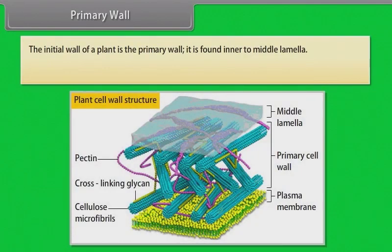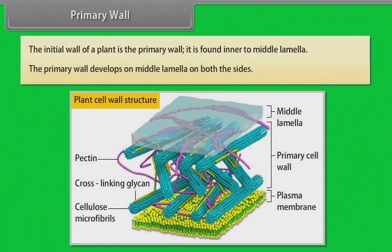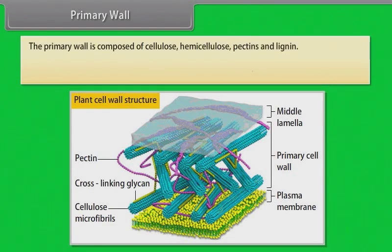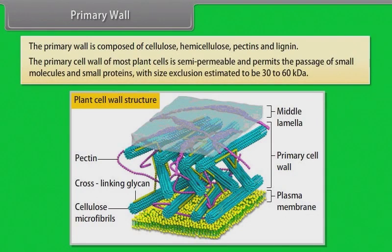Primary wall: The initial wall of a plant is the primary wall, found inner to the middle lamella and developing on both sides of it. The primary wall is composed of cellulose, hemicellulose, pectins and lignin. The primary cell wall of most plant cells is semi-permeable and permits the passage of small molecules and small proteins with size exclusion estimated to be 30 to 60 kDa (30,000 to 60,000 atomic mass units).